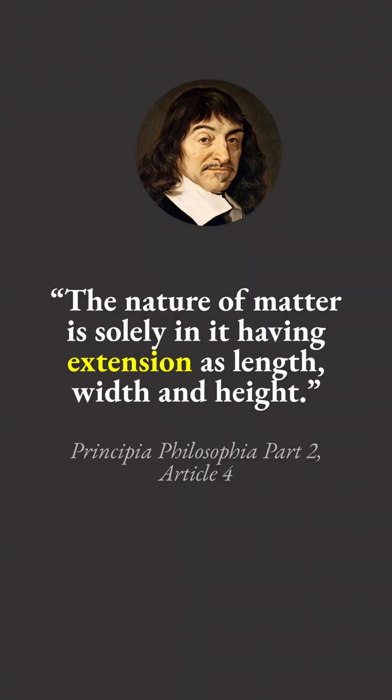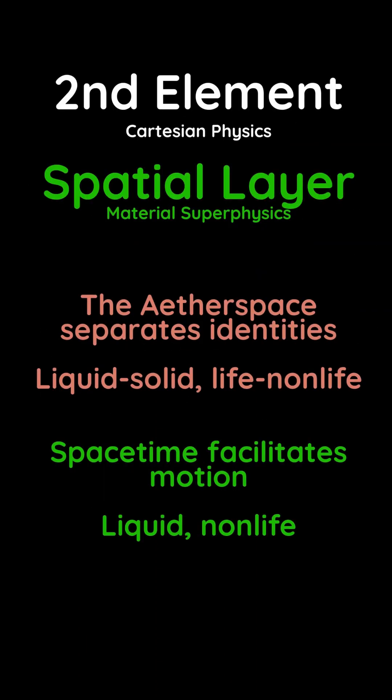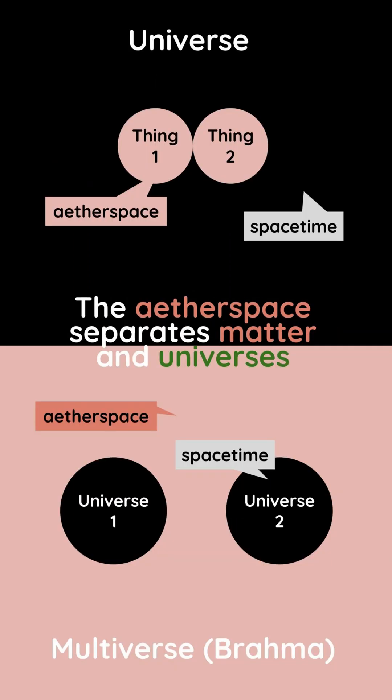The nature of matter is solely in it having extension as length, width, and height. This is different from the external space called spacetime. These two spaces are part of the second element, which we call the spatial layer. The job of the aether space is to separate identities.